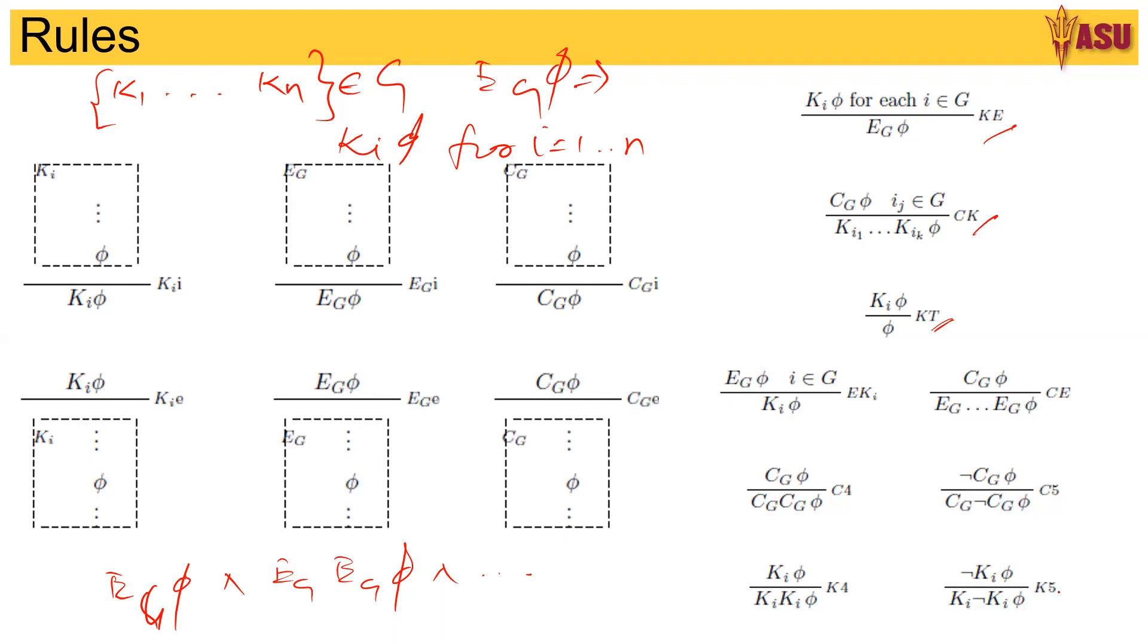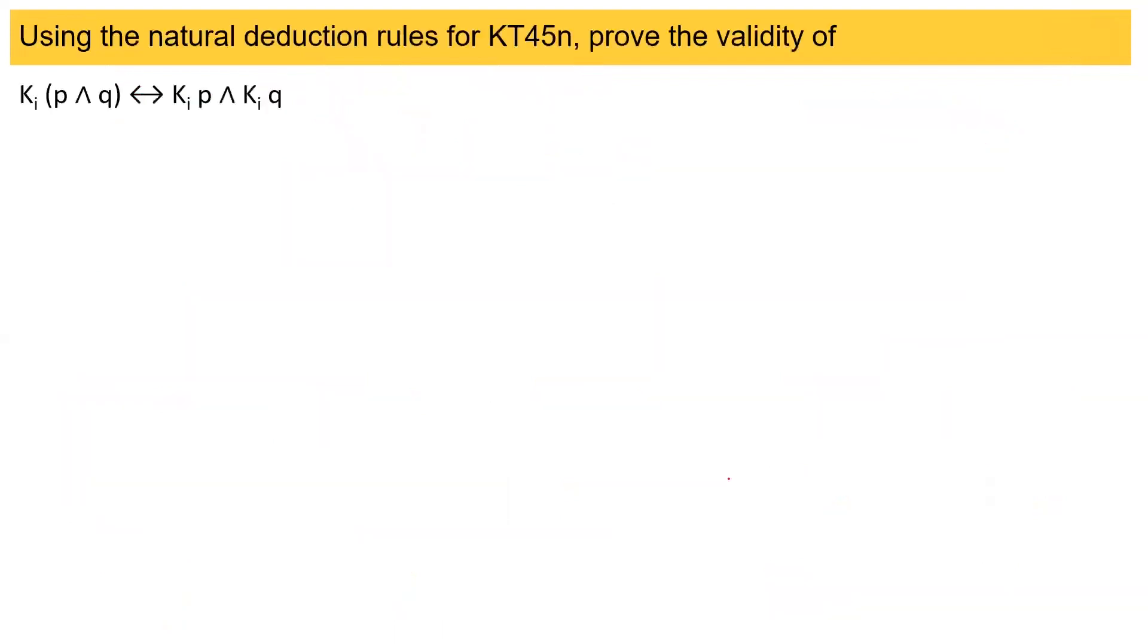Here we are saying using the natural deduction rules of KT45 power N, that is we have N agents, prove the validity of this: that if agent an arbitrary agent knows P and Q, then the arbitrary agent knows P and the arbitrary agent knows Q. These two are equivalent formulas. That is, we need to prove both sides of this equation.